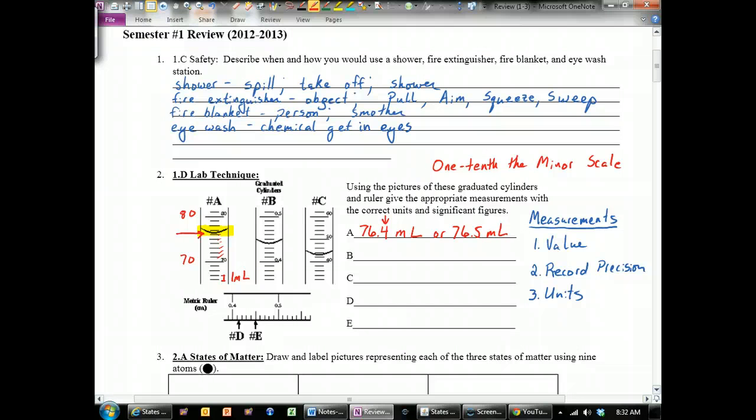For B, we've got the bottom of the meniscus is right on one of these lines this time. So looking at the correct value, we've got 0.4 down here and 0.5 up here. So each marking, or the minor scale, is 0.01, a hundredth spot.